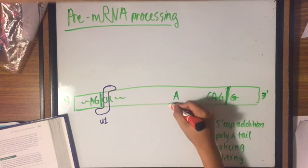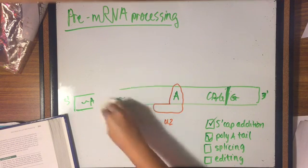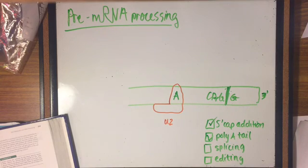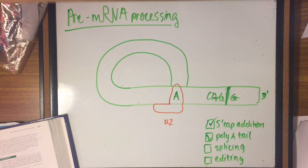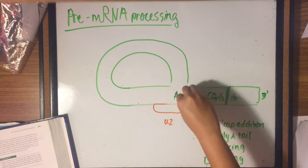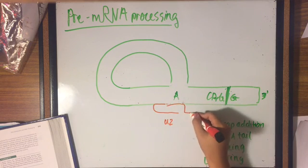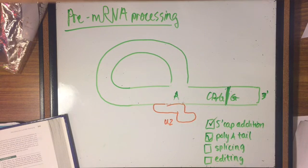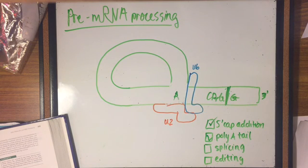First, the snRNP U1 attaches at the 5' splice site and then U2 attaches to the branch point. This addition of the giant snRNP complex causes a conformational change in the spliceosome. The intron loops over and the 5' splice site is brought close to the branch point. The particles U1 and U4 dissociate from the spliceosome. And the formation of base pairs between U6 and U2 and between U6 and the 5' splice site are seen.